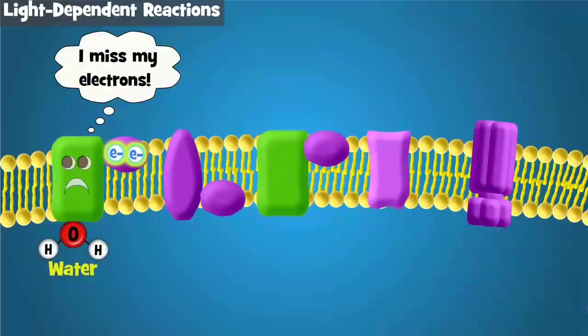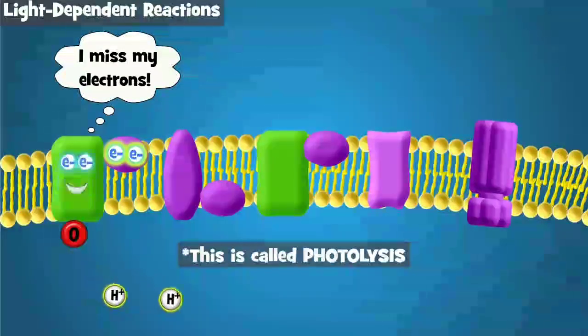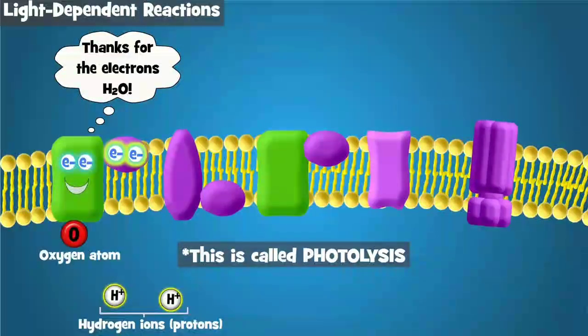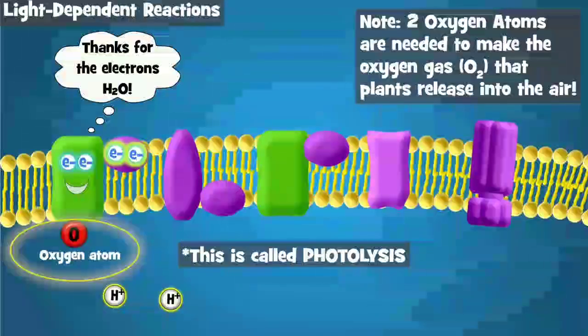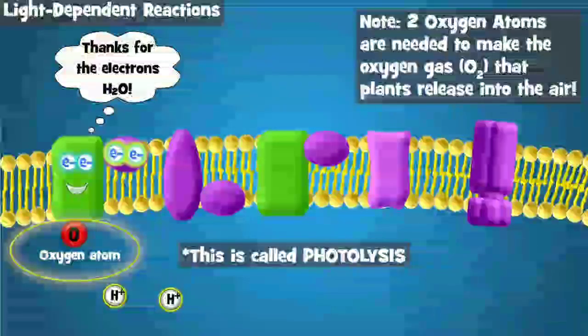To replace them, water is split and its electrons go to chlorophyll. When water is split, electrons, hydrogen ions, and oxygen are produced. You probably know that plants make oxygen when they do photosynthesis. This is where that oxygen comes from.